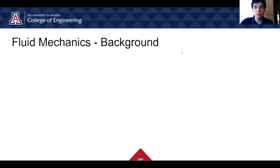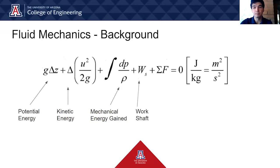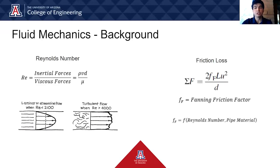The driving force of fluid mechanics is a pressure gradient caused by the dissipation of mechanical energy due to friction. To analyze frictional losses within a system, students will start with the mechanical energy balance. The equation is composed of the major energy sources and sinks such as kinetic energy and frictional losses. To determine frictional losses, students will calculate the Reynolds number, which is the dimensionless ratio of the inertial forces to the viscous forces of the fluid. Depending on the value of this number, students can categorize the flow into two major sections: laminar and turbulent.